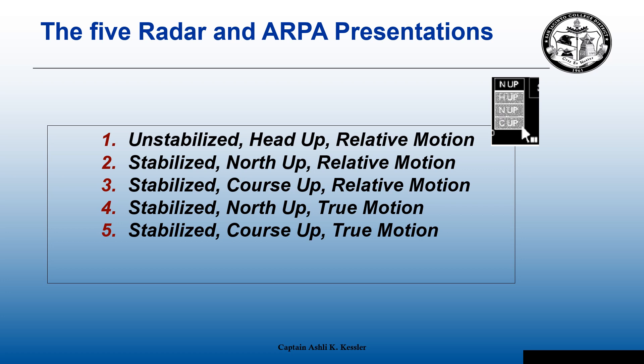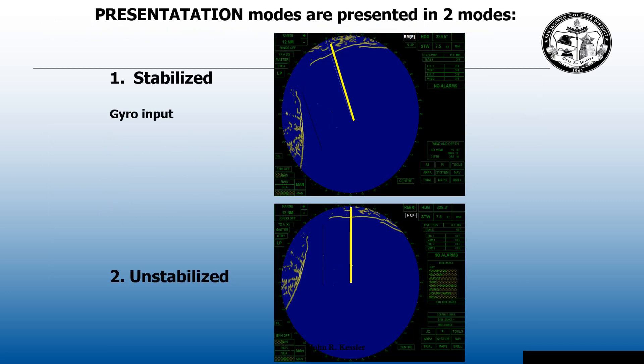These are the five radar and ARPA presentations. There's only one unstabilized radar — it's a relative motion head up radar. There are two relative motion stabilized radars: the north up and the course up. And there are two true motion stabilized radars: the north up and the course up. The presentation modes are presented in two modes — your radar is going to be either stabilized or unstabilized. To stabilize the radar, you need a gyro compass to freeze that picture.